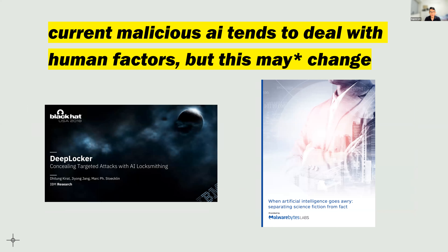A lot of malicious AI tends to deal with human factors — tricking, scamming, and fooling people by pretending to be real. We haven't really seen a lot of malicious AI usage in more technical, traditional malware, though this may change. The closest example was in 2018 at Black Hat when the IBM research team presented DeepLocker, an AI-enabled malware. It used AI to obfuscate itself and recognize the intended target via webcam, activating the malware — more proof-of-concept than actual exploit. Malwarebytes was also raising alerts about how AI could enable malware in the future.